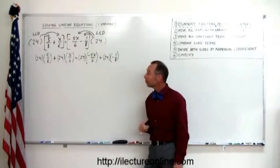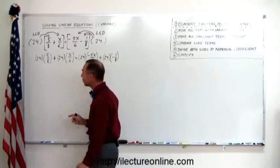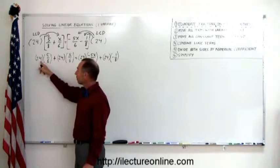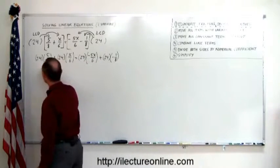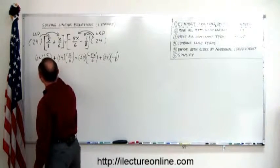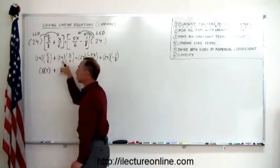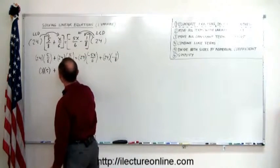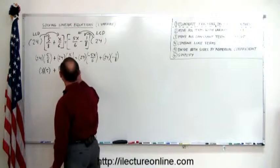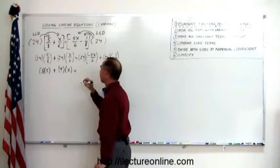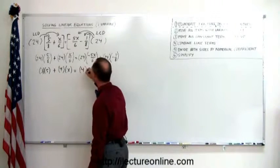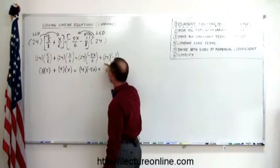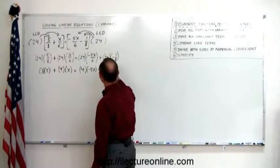Now the next step is going to simplify each of those multiplications. Notice that 8 goes into 24 three times, so 24 divided by 8 is 3, so this becomes 3 times 5. Plus, 6 goes into 24 four times, so this becomes 4 times x. 6 goes into 24 four times, so this becomes 4 times minus 5x. And 8 goes into 24 three times, so it becomes 3 times negative 1.